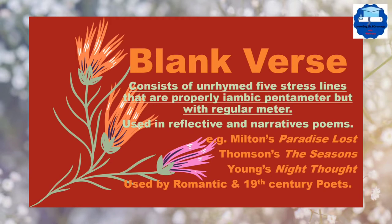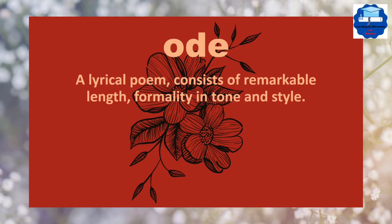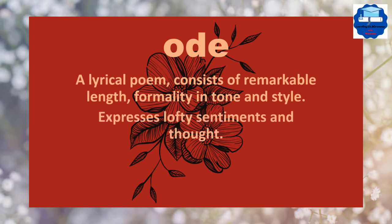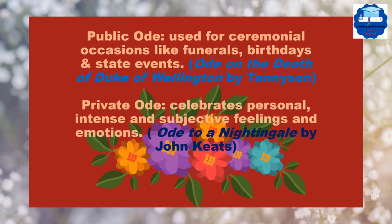Ode is a lyrical poem that consists of remarkable length and formality in tone and style. It expresses lofty sentiments and thoughts. Ode has two kinds. The first one is public ode and the second one is private ode. Public ode is used for ceremonial occasions like funerals, birthdays and state events. For example, Ode on the Death of Duke of Wellington by Tennyson. And private ode celebrates personal, intense and subjective feelings and emotions. For example, Ode to a Nightingale by John Keats.